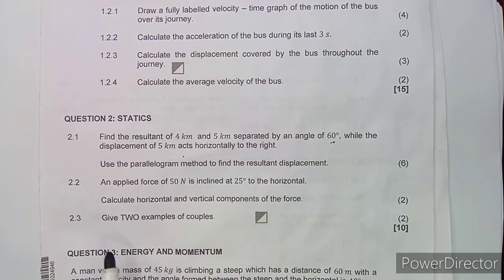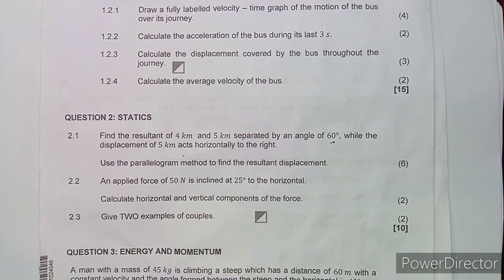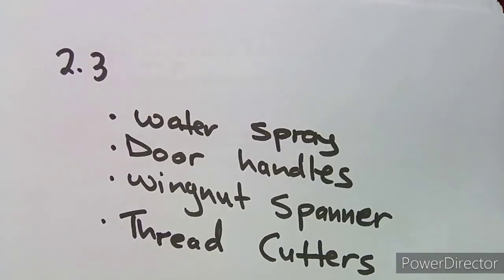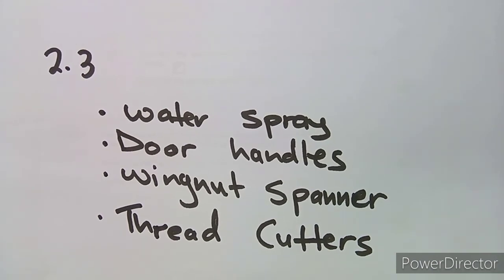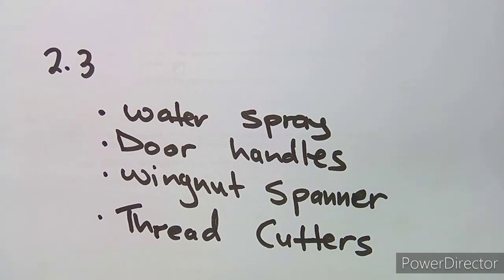On 2.3, we are asked to give two examples of couples. Examples of couples include: a water spray, door handles, a wing nut, a spanner, and thread cutters. You can use any of these answers — choose your best ones since the question only asks for examples of couples.